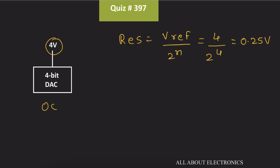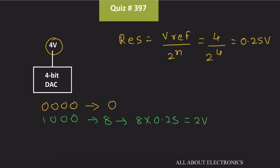So if 0000 is the input to this 4-bit DAC, then the corresponding output voltage will be equal to 0. On the other end, if the input is all 1s, that corresponds to 15 in decimal, and the corresponding output will be equal to 15 times 0.25V. So in this way, if the reference voltage of the 4-bit DAC is 4V, we will get the corresponding output voltages.